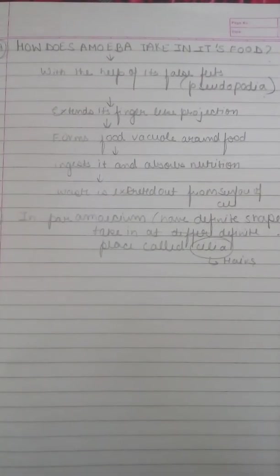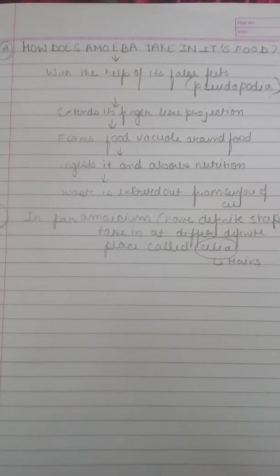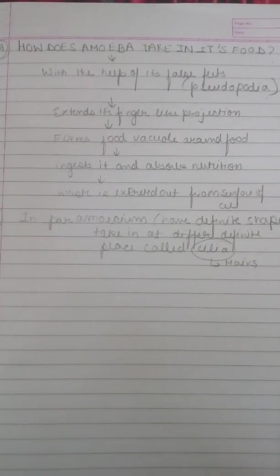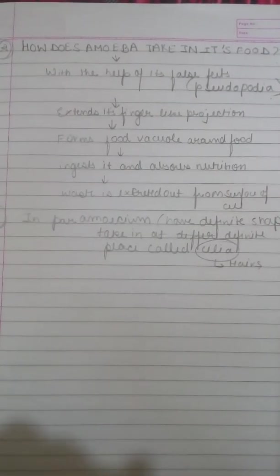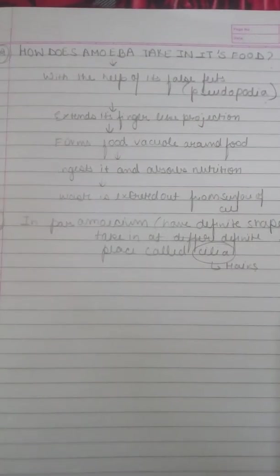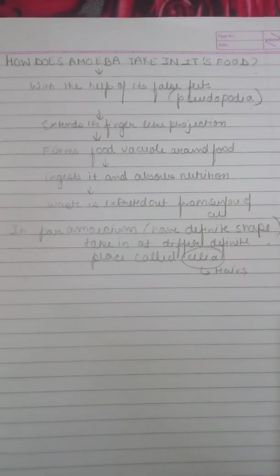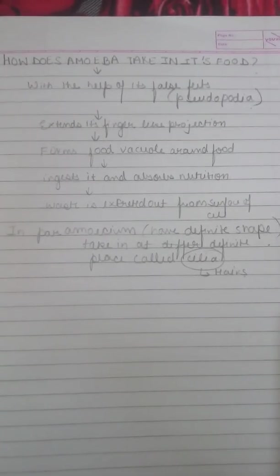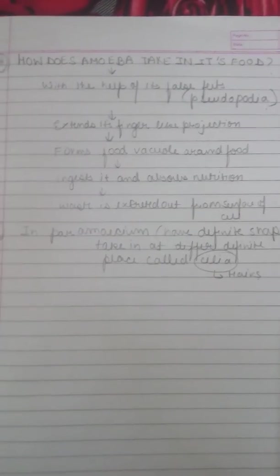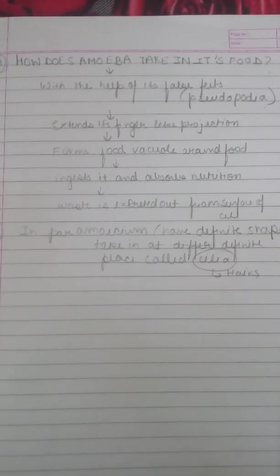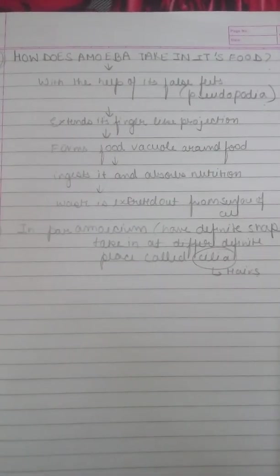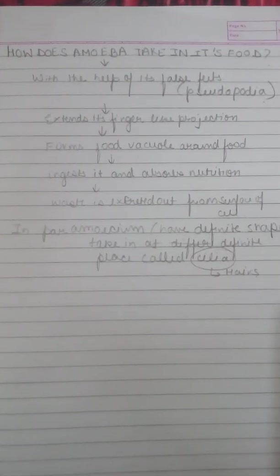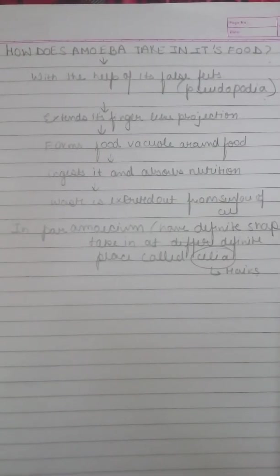There is a very important question: How does amoeba take in its food? This is the difference between how amoeba and paramecium take their food. First, let's talk about amoeba. Amoeba has false finger-like extensions called pseudopodia, which means false feet. They extend these finger-like projections which are going to ingest the food.